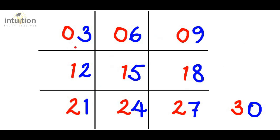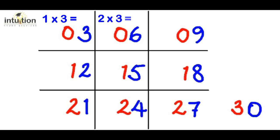So over here we've got 1 times 3, which is 3. Here we've got 2 times 3, which is 6. Here we've got 3 times 3, which is 9.